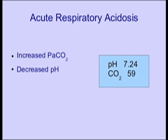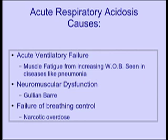There's an example on the right on this slide. Here are some of the principal causes of acute respiratory acidosis. One of the most commonly seen is acute ventilatory failure from muscle fatigue. You might see this in patients who are suffering with pneumonia and have been struggling to breathe for a period of time.